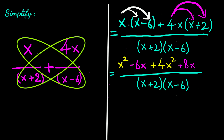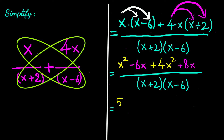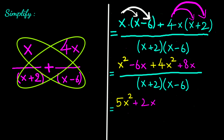Let's check the like terms. x squared and 4x squared are like terms — adding them gives 5x squared. Then negative 6x and positive 8x simplify to positive 2x, divided by (x plus 2)(x minus 6).